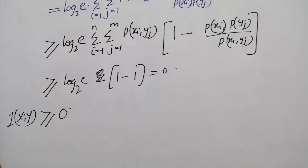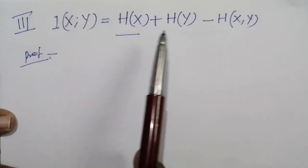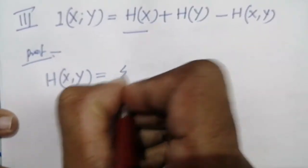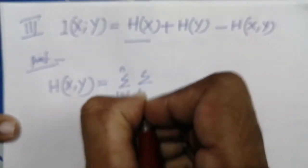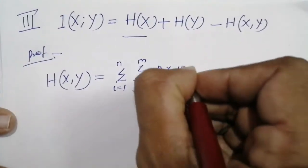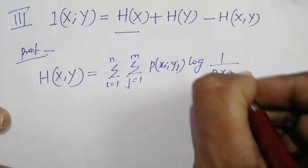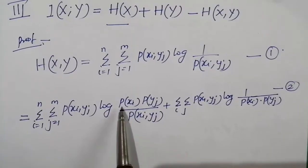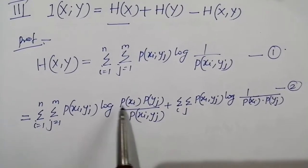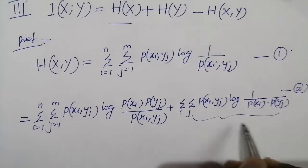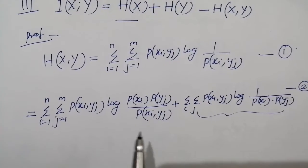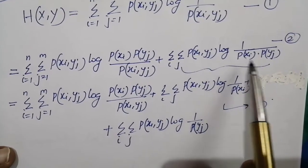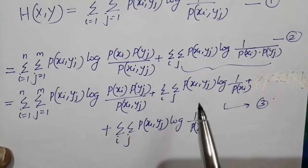The third property is I(x;y) = h(x) + h(y) - h(x,y). For proving this, we start with h(x,y), which equals the double summation over i from 1 to n and j from 1 to m of p(x,y) log(1/p(x,y)). By adding and removing the effect of p(xi)·p(yj), equation two can be rewritten by splitting: the double summation of p(xi,yj) log(1/(p(xi)·p(yj))) plus a corrective term.